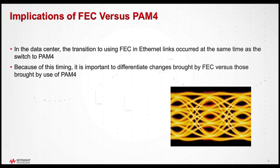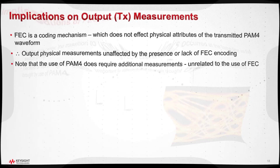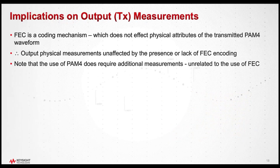In this section we're going to start out by talking about the implications of forward error correction on output measurements, or the traditional TX measurements from the transmitter. When looking at output or transmitter measurements, there really are not major implications placed on those measurements by the inclusion of forward error correction in the data.